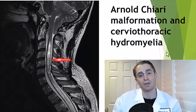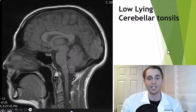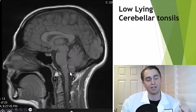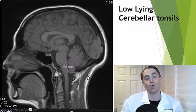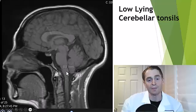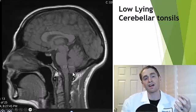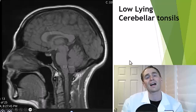However, sometimes there's a mild variant of this where the cerebellar tonsils lie low down through the foramen magnum — the hole where the spinal cord exits the cranial vault — and this is very minimal and often a harmless incidental finding, not causing any symptoms.